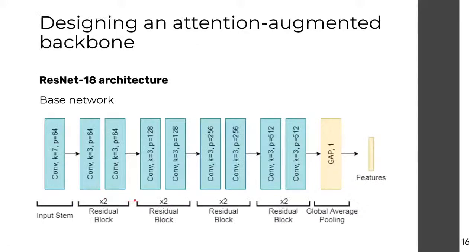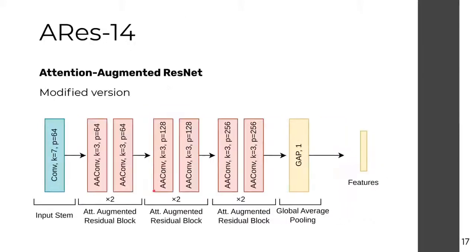Being able to take all facial regions into account together should produce better results than taking hints from them separately. As a baseline, we use a regular ResNet-18 architecture with one input stem and four convolutional blocks. To integrate attention, we use self-attention augmented convolutions as drop-in replacements for all the convolutional layers in the core convolutional blocks. We keep the input stem as a regular convolution. Training these attention-augmented convolutions is very resource-heavy, so due to hardware constraints, we remove the last convolutional block entirely, leaving us with 14 convolutional layers, which we call ARIS-14.